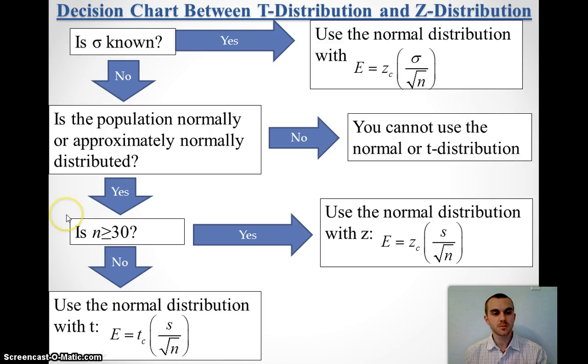Is it at least 30? If it's at least 30, I'm going to use the z-score and use the sample standard deviation. But if it's less than 30, I have to use the t-score and the sample standard deviation.